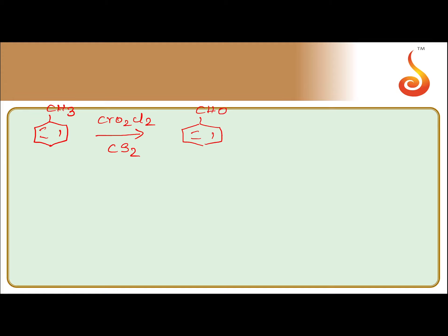So when toluene is treated with chromyl chloride in the presence of carbon disulfide, you will get benzaldehyde.